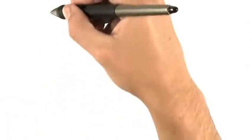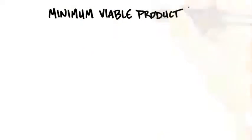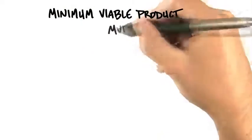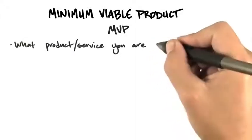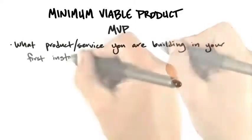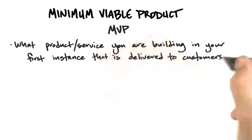Now, why you're doing all this is to define the minimum viable product, or sometimes called the MVP for short. The MVP basically is what product or service you're building in your first instance that's delivered to customers.